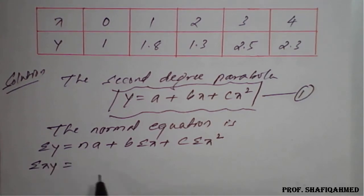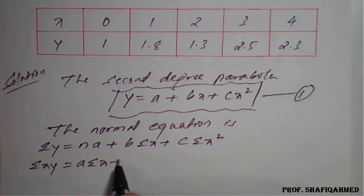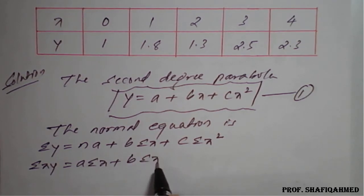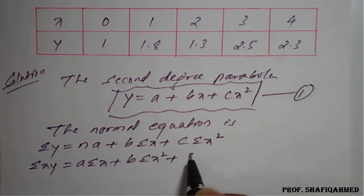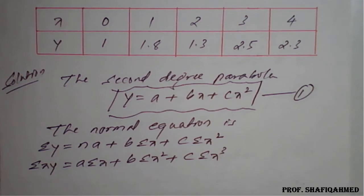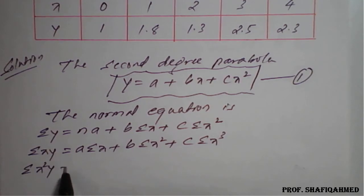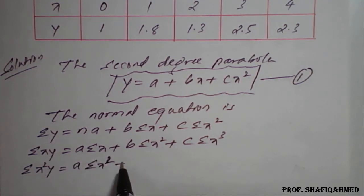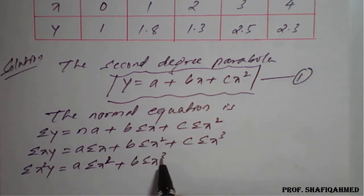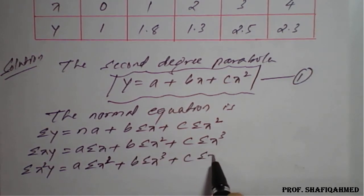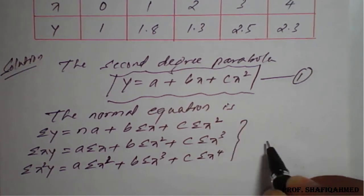The second normal equation is: summation(xy) = a·summation(x) + b·summation(x²) + c·summation(x³). Multiply by x again to get the third: summation(x²y) = a·summation(x²) + b·summation(x³) + c·summation(x⁴).